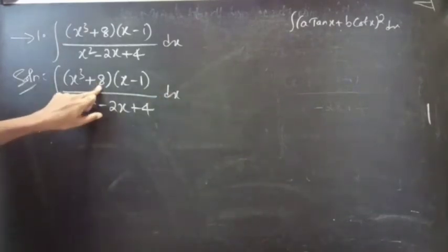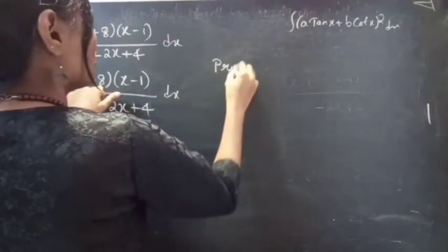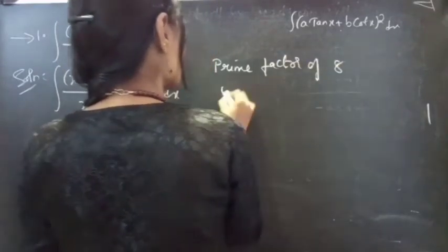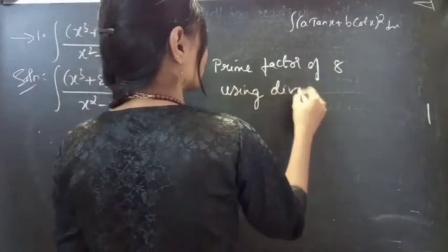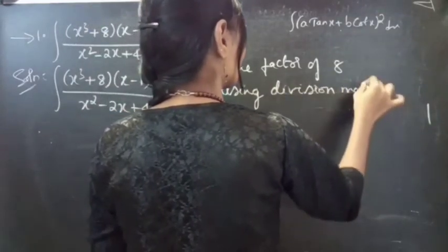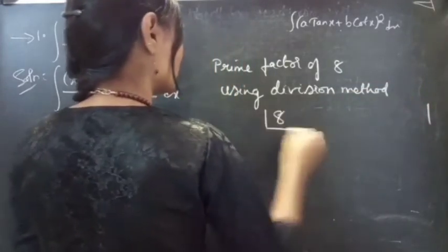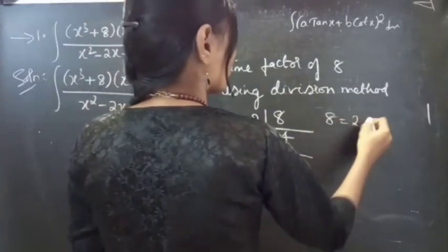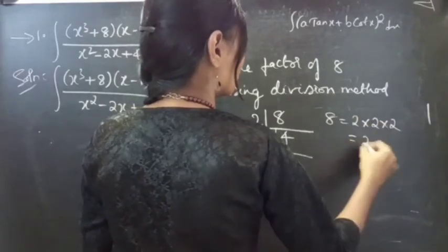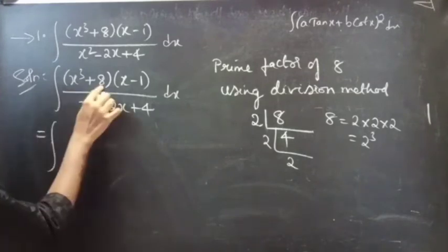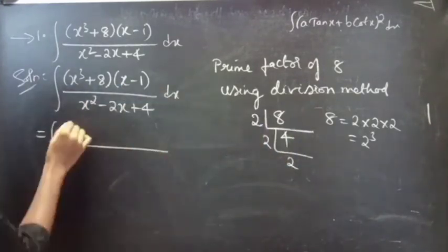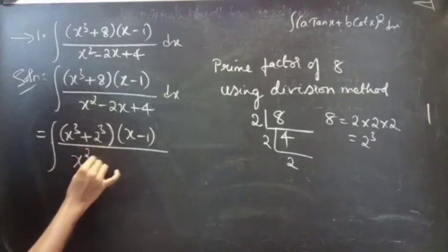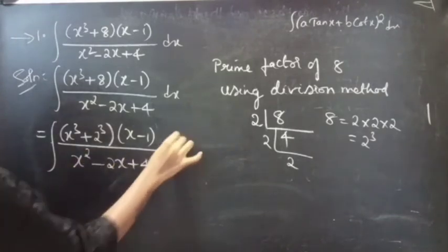So we are given the integrand (x³ + 8)(x - 1) / (x² - 2x + 4) dx. Here you are having 8, so we can find the prime factor of 8 using the division method. 8 equals 2 × 2 × 2 equals 2³. Now we will replace this 8 by 2³, giving us (x³ + 2³)(x - 1) / (x² - 2x + 4) dx.